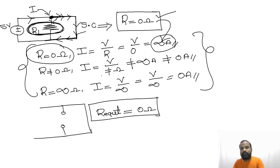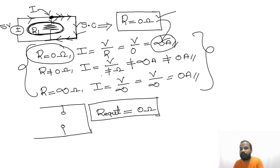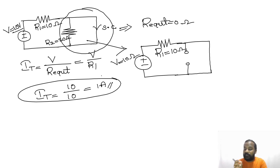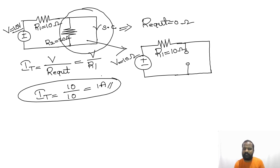To summarize the key points: whenever resistance is zero in any branch, maximum current flows through that branch. Whenever resistance is infinity in a branch, no current flows and we treat it as an open branch. When resistance is neither zero nor infinity, some finite current flows through that branch. Thank you for watching — please subscribe to the channel for more updates.